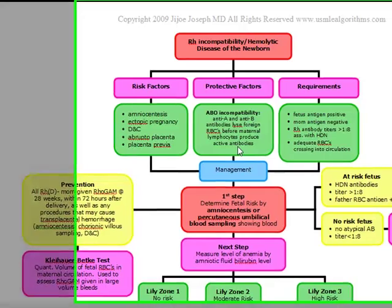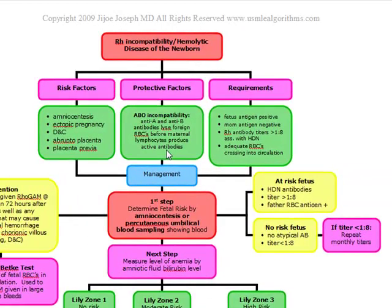A protective factor is ABO incompatibility. If a patient has ABO incompatibility, there is actually a decreased risk of maternal isoimmunization from foreign RBCs. What happens is there are naturally occurring anti-A and anti-B antibodies, and these rapidly lyse the foreign red blood cells before the maternal lymphocytes are stimulated to produce active antibodies.